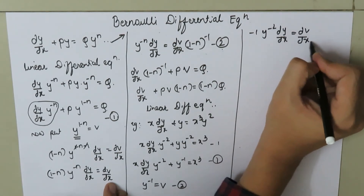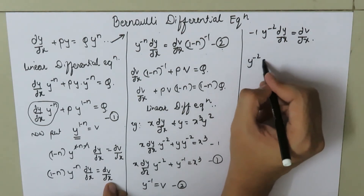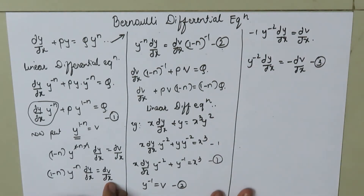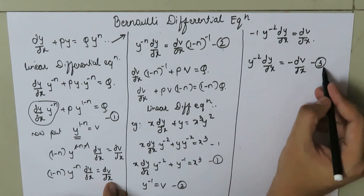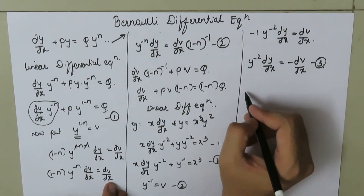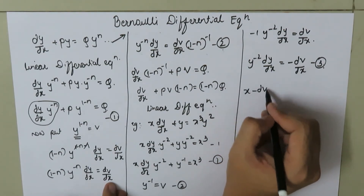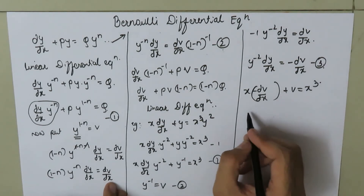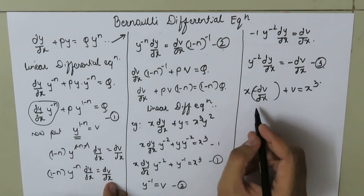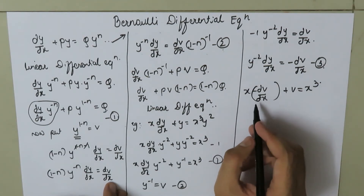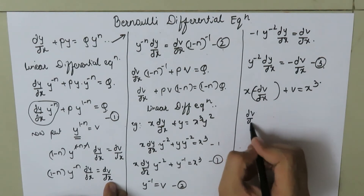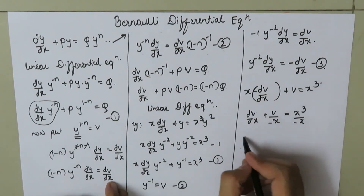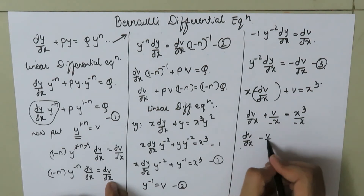Differentiating, negative 1 times y to the power negative 2 times dy/dx equals dv/dx, so y to the power negative 2 times dy/dx equals negative dv/dx. Call this equation number 3. Substituting equation 3 into equation 1, we get x times negative dv/dx plus v equals x cubed. Dividing by negative x gives dv/dx minus v divided by x equals negative x squared.